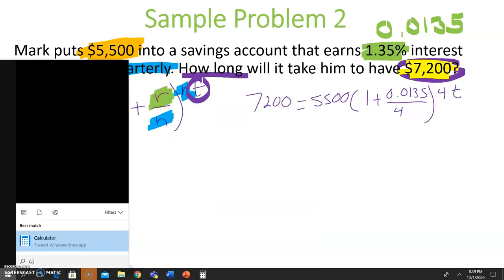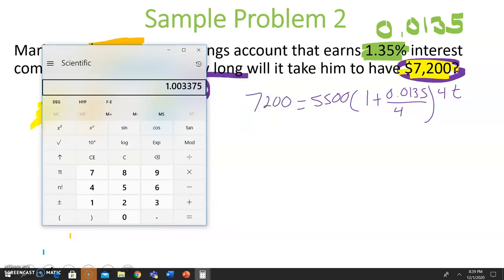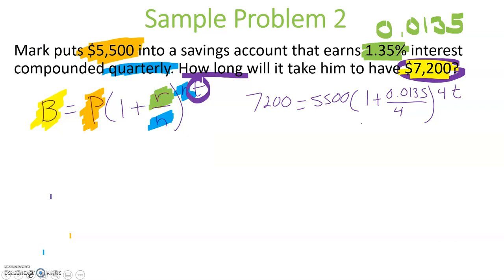Now, we're going to follow a similar process, almost identical to the previous one, just different numbers. So we're going to begin by simplifying the part inside the parentheses. So I'm going to do 1 plus 0.0135 divided by 4. And for the sake of accuracy, we're not going to round. We're going to write it exactly as we see it. So we have a 1.003375. And the less we round, the more accurate our final answer will be.